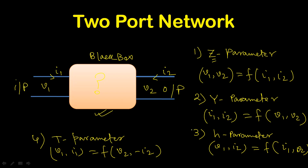Our topic is related to the H parameter. Why are we going to select the H parameter for small signal modeling of BJT, and why not the Z parameter, Y parameter, or T parameter? That will be discussed later when we formulate the final model of BJT — from there we can say why we are selecting the H parameter and not the others.